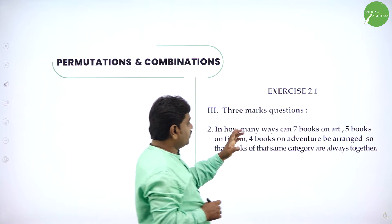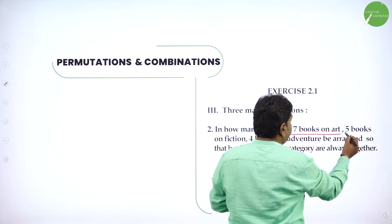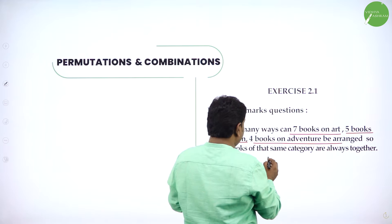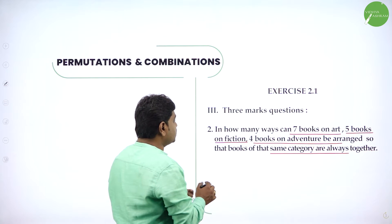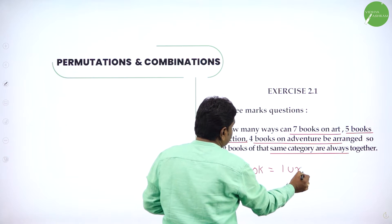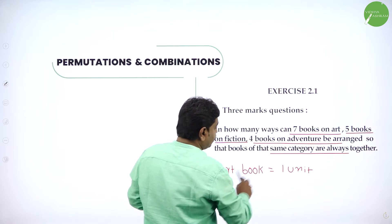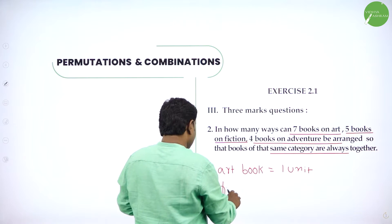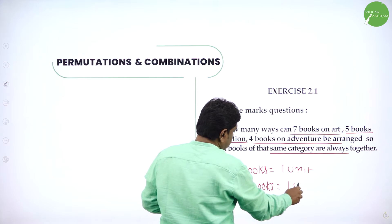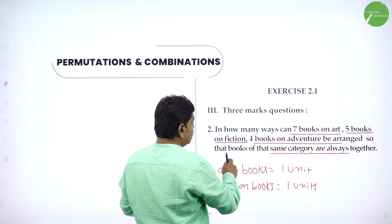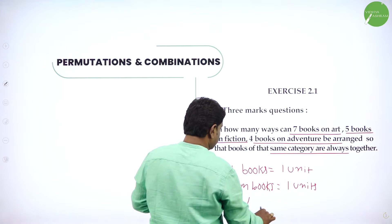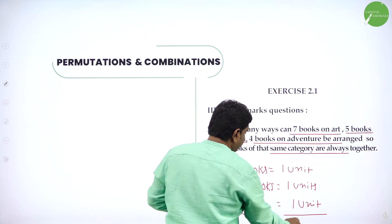Next: in how many ways can 7 books of arts, 5 books of fiction, and 4 books of adventures be arranged so that books of the same category are always together? 7 art books make it 1 unit, 5 fiction books make it 1 more unit, and 4 adventurous books equal 1 unit. Total: 1+1+1 = 3 units.